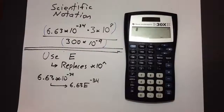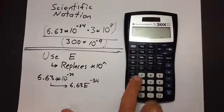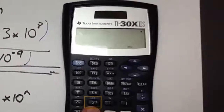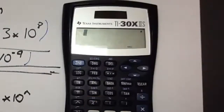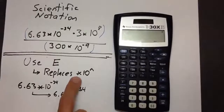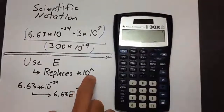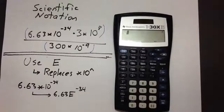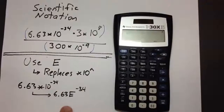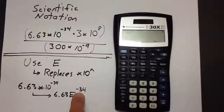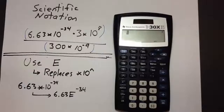On the TI-30X2S, there's a key that says x negative 1, but above it says uppercase E. What the uppercase E does is it replaces 'times 10' and the exponent sign when you enter scientific notation. So for 6.63 times 10 to the negative 34th power, you'll enter 6.63 uppercase E negative 34 — no need to say times, no need to say 10, and no need to place the exponent operator.